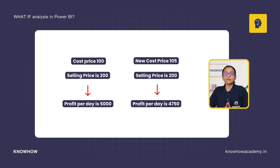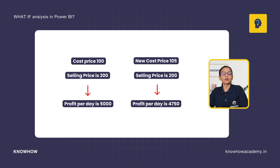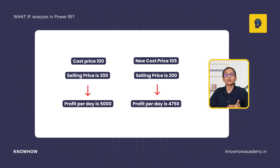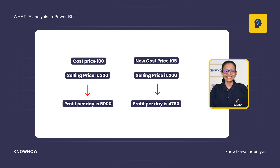Before incrementing the cost price, your profit was Rs. 5,000, and after incrementing it, your profit becomes Rs. 4,750. So you have implemented what-if analysis like this: what if my cake cost price is increased by Rs. 5 and I am still selling the cake at Rs. 200? The result is that our profit will decrease if our cost price is increased by Rs. 5. Now let's implement what-if analysis practically in Power BI.